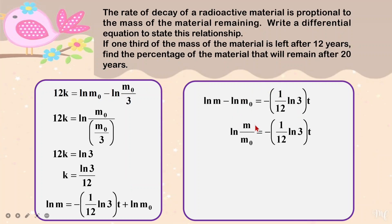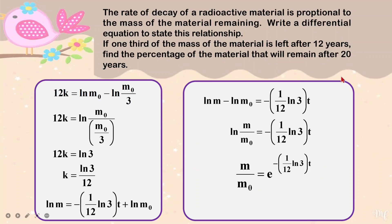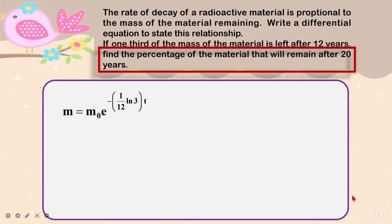I put in all these details and rearrange nicely to find k. So k equals ln 3 over 12. Once I have this, I put it back and try to answer the next part of the question. I rearrange until I get the equation for the mass. Make sure you are good in your algebra because that is what we are doing here — rearranging until you get the equation you need.